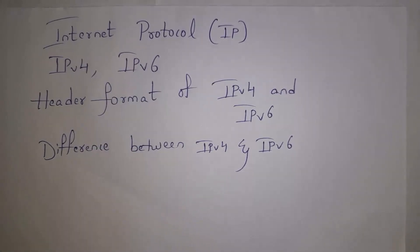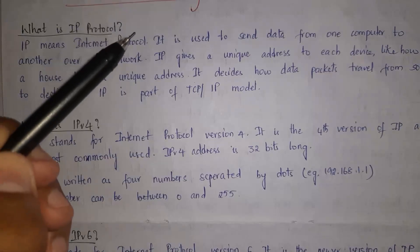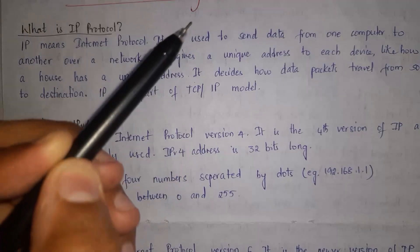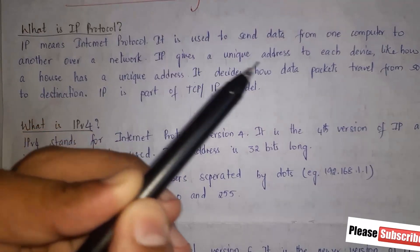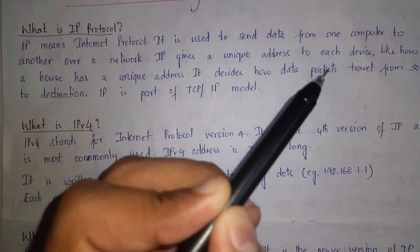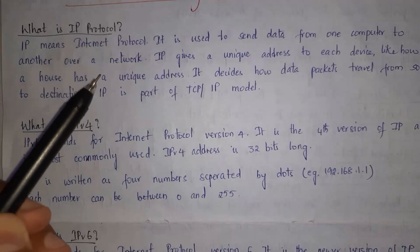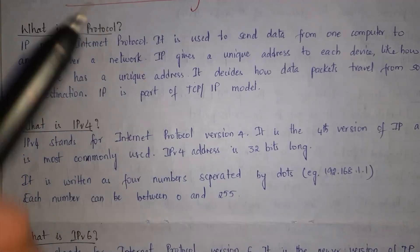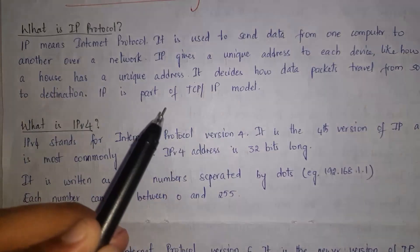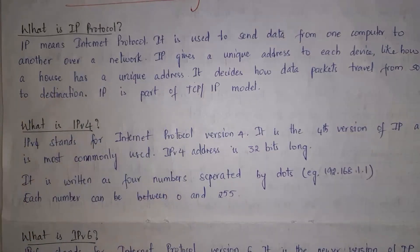Let's get started. IP stands for Internet Protocol. It is used to send data from one computer to another computer or network. It gives a unique address to each device, like how a house has a unique address. It decides how data packets travel from source to destination. Because IP address is part of the TCP/IP model, whenever data is sent to a receiver, the data successfully reaches the receiver because of the IP address.